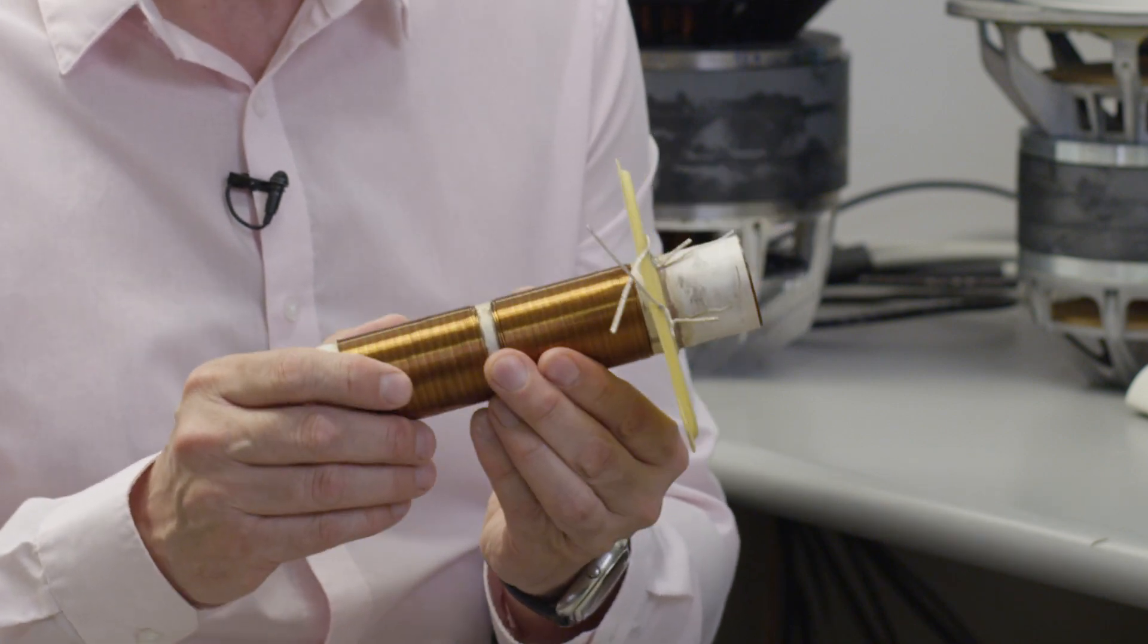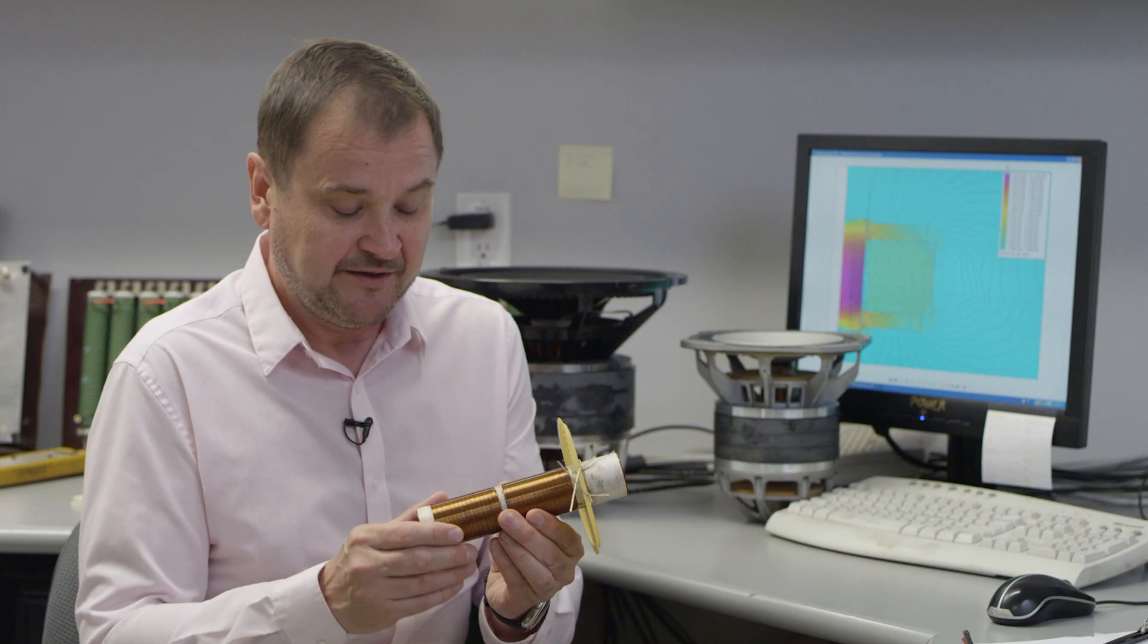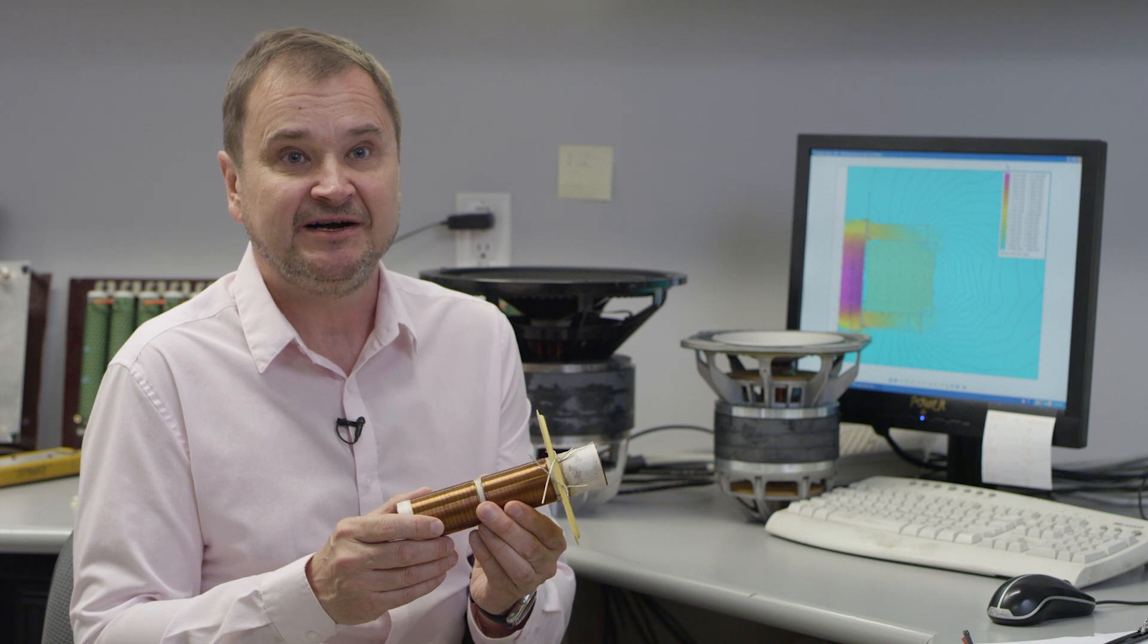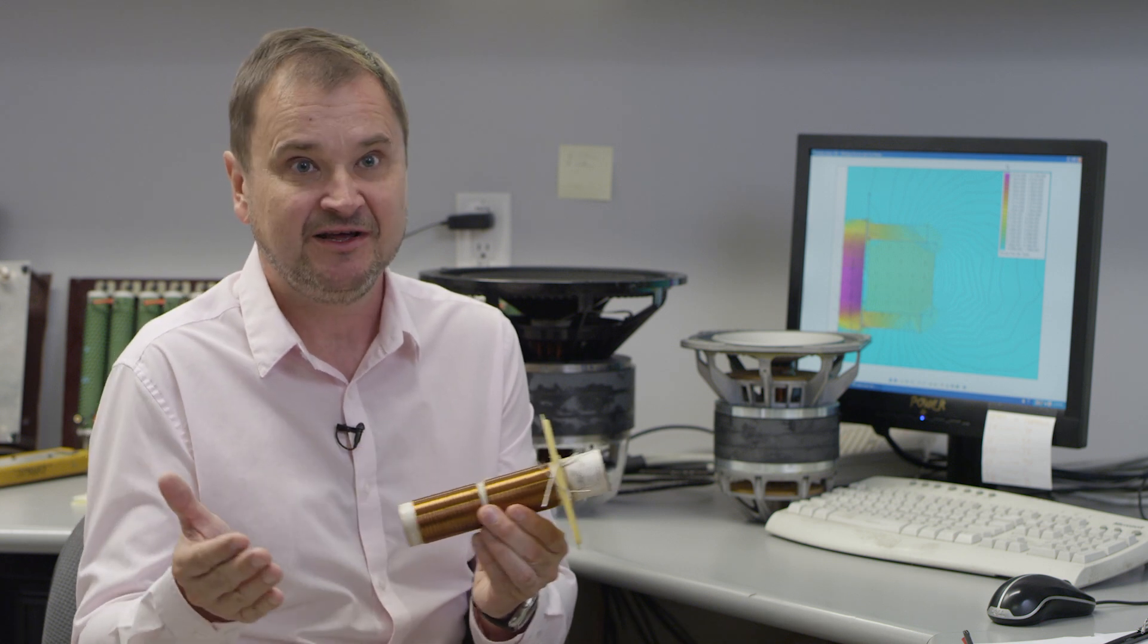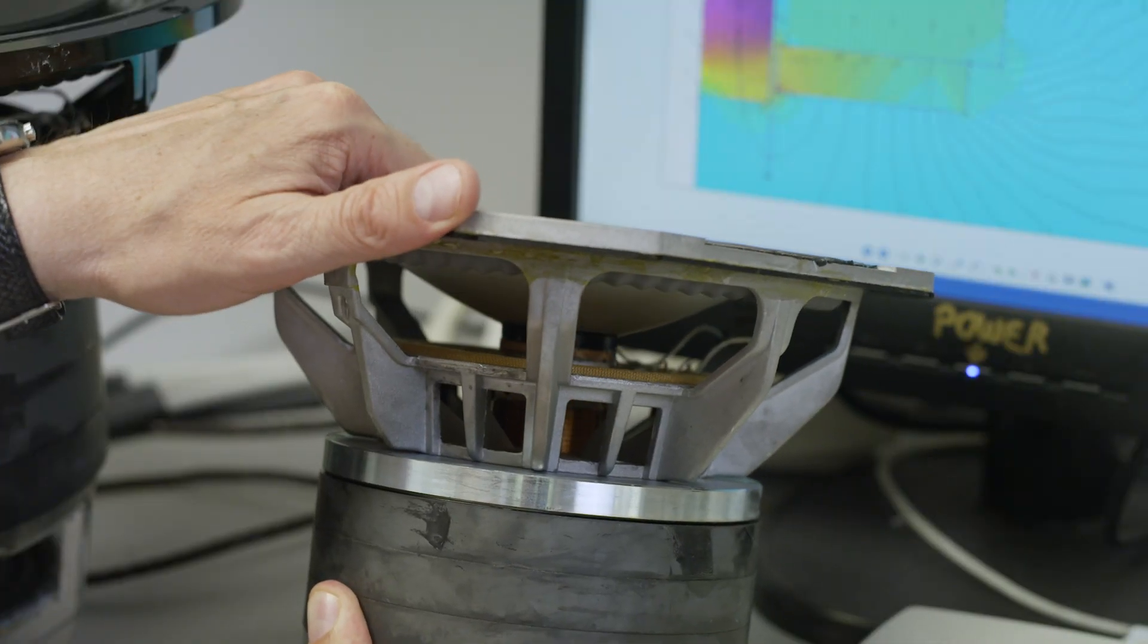So this distortion mechanism is completely eliminated. Another source of distortion is inductance of the motor structure that is changing as the coil moves in either direction.